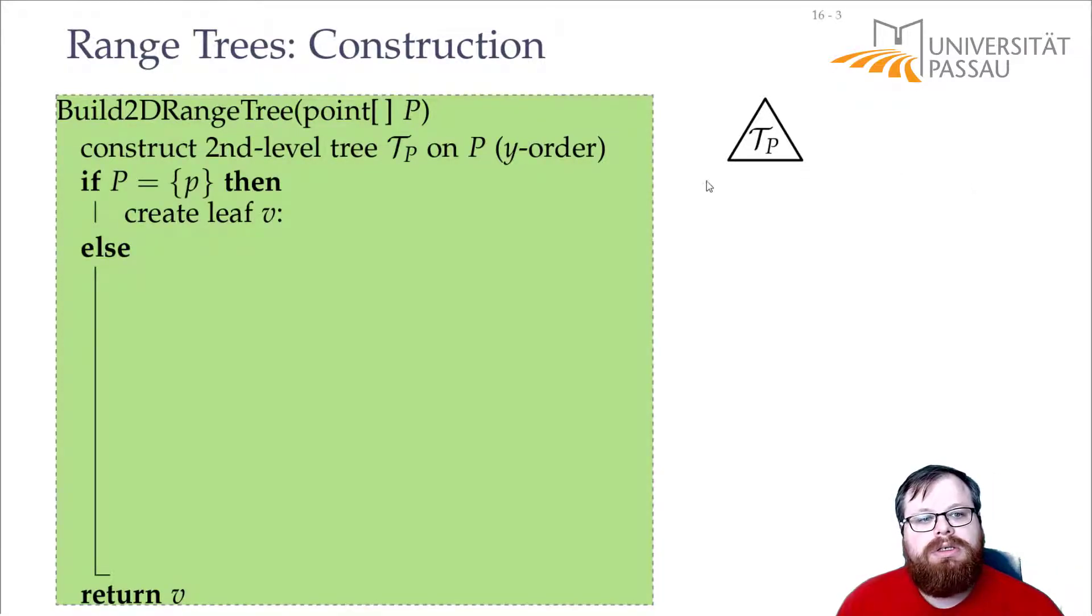We again have a recursive function. So if we only have one point left, then we create a leaf. And that leaf points to the auxiliary tree tp, that also has just this point inside.